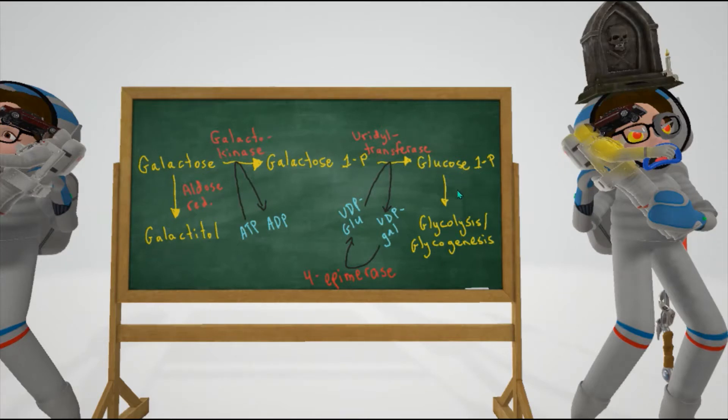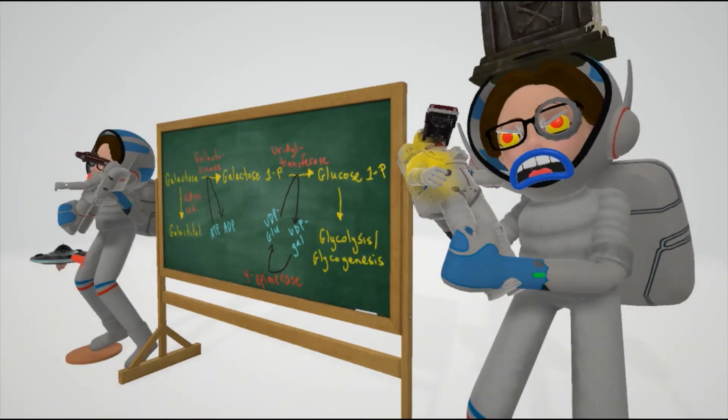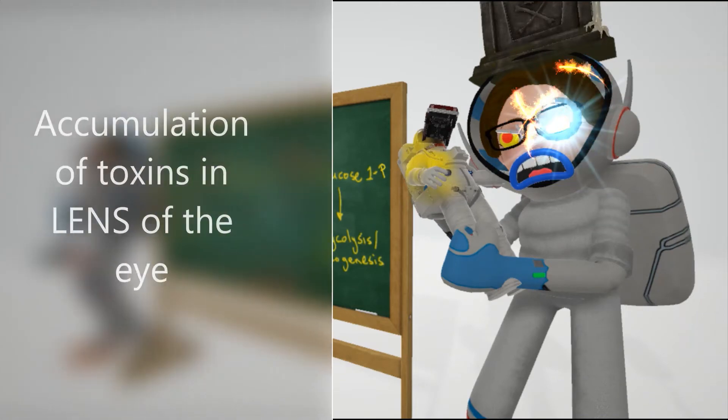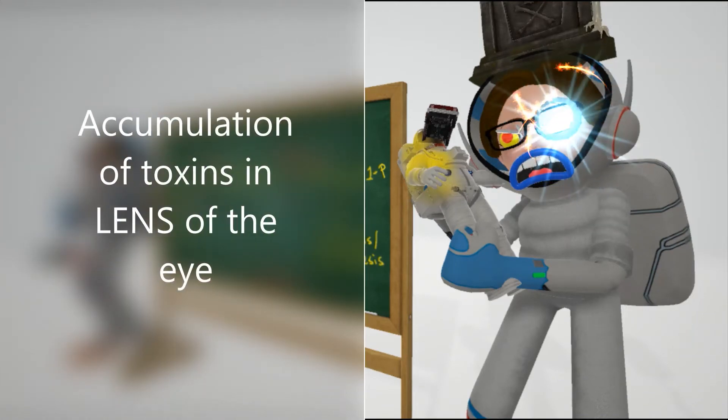In classic galactosemia there's an absence of galactose 1-phosphate uridyltransferase, and that's why here it's exploding. Toxic substances including galactitol, as we see over here, can accumulate in the lens of the eye. That's why if we see this teacher over here with a big lens around her eye with this stuff forming around it, that represents the accumulation of toxins in the lens of the eye.